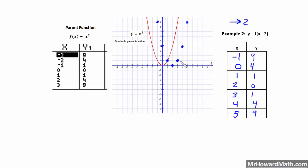Here are all my points shifted to the right 2. I just graph that in here, and we have simply taken the parent function and moved it to the right 2 based on this transformation. Let's move on to the next example.